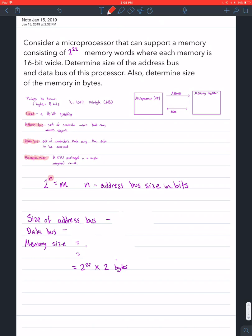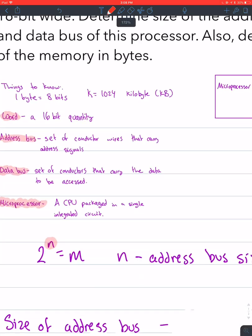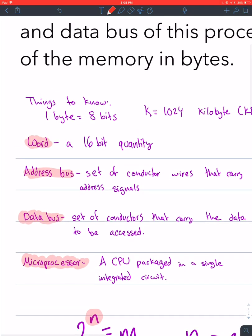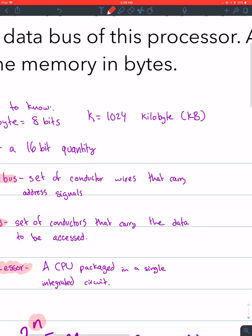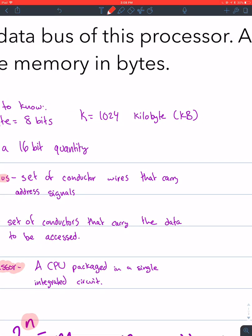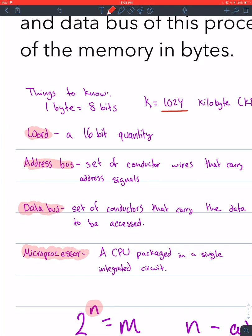There's a few things you need to know prior to doing this question. One byte equals eight bits - that's our conversion. And a kilobyte equals this number - that's how many bytes are in a kilobyte.